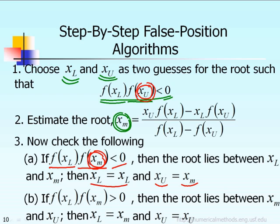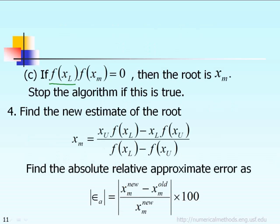On the other hand, if we are in the opposite situation — that means if f(xl) times f(xm) is positive — then the new lower bound will be equal to the predicted root we just calculated, but the upper bound stays the same as previously defined. The third possibility is if f(xl) times f(xm) is exactly equal to zero. In that case we are lucky, because that means f(xm) equals zero, and by definition the root is xm. So if this is the case, we stop the algorithm.